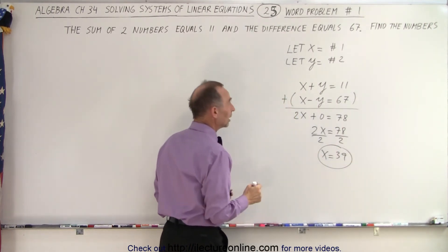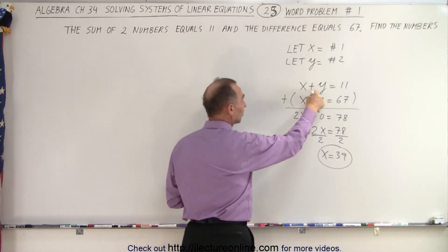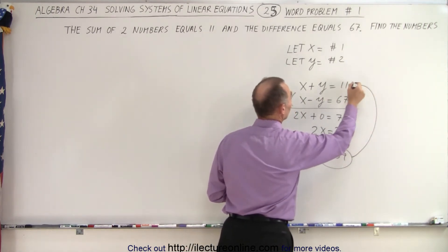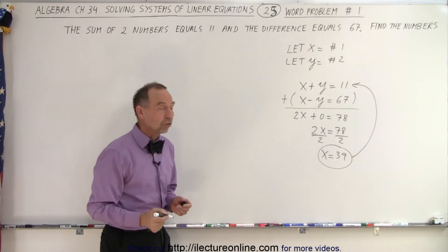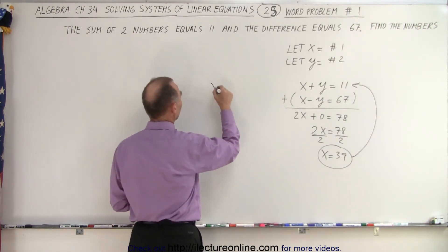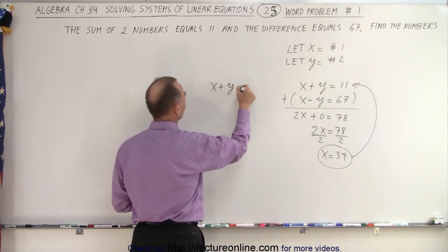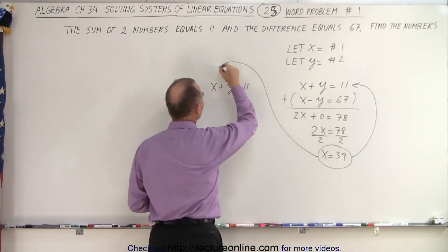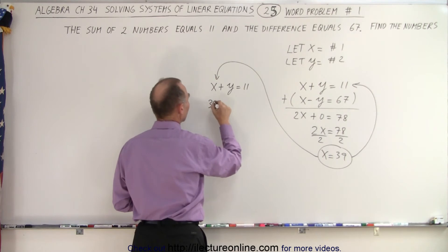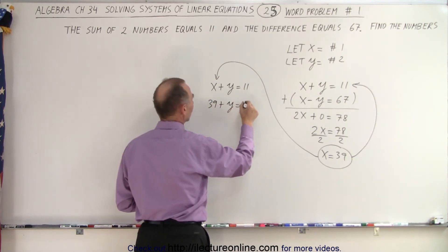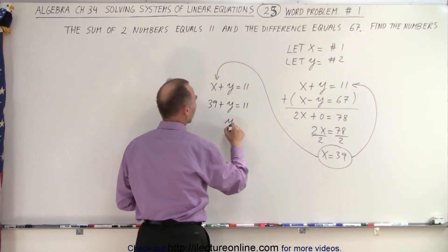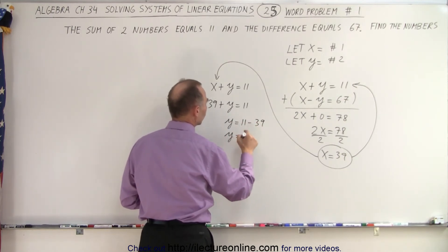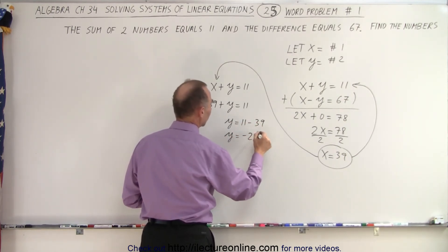So if x equals 39, then we can find what y equals by substituting it into one of the two equations. We get x plus y equals 11. x is 39, so we substitute that in: 39 plus y equals 11. Therefore, y equals 11 minus 39, so y equals negative 28.